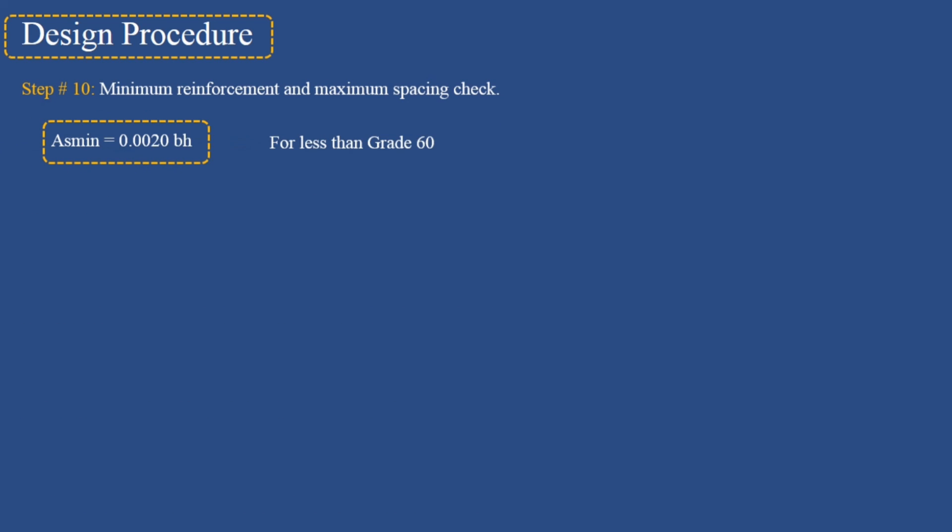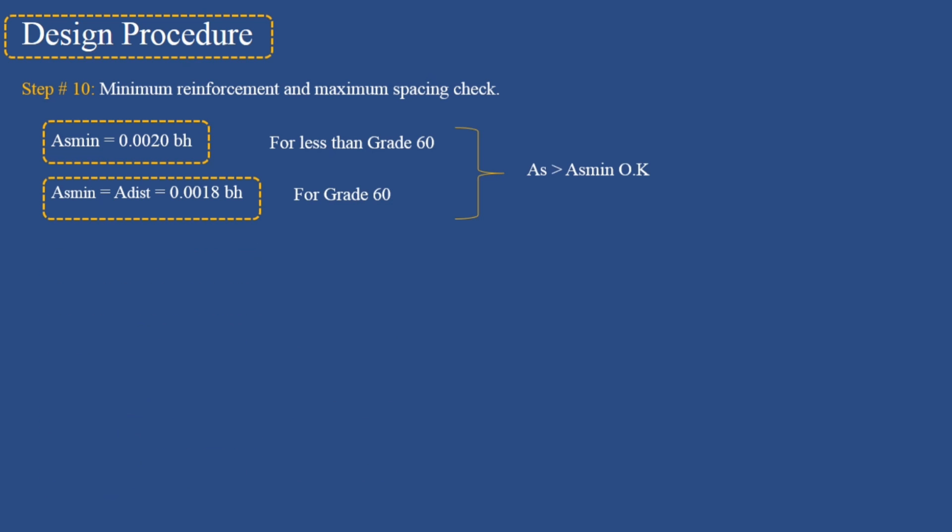Step 10: Minimum reinforcement and maximum spacing check. Minimum reinforcement for steel less than Grade 60 equals 0.0020 × b × h, and for Grade 60 equals 0.0018 × b × h.